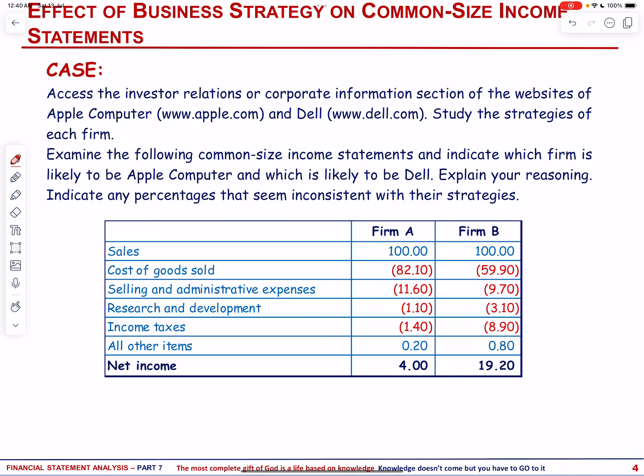So here is the case. Assess the investor relations or corporate information section of the websites of Apple Computer and Dell. Study the strategies of each firm, examine the following common size income statement, and indicate which firm is likely to be Apple Computer and which is likely to be Dell. Explain your reasoning and indicate any percentages that seem inconsistent with their strategies.